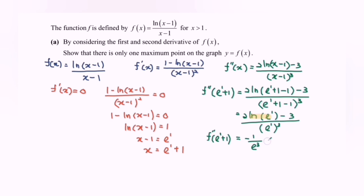Since f''(e+1) = -1/e³, which is less than 0, this confirms a maximum value at x = e + 1. We have thus shown that there is only one maximum point on the graph.